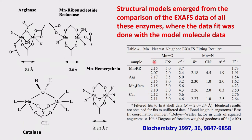Typically you find the distance and the coordination number — how many such atoms are there — along with the standard deviation. For manganese-oxygen and manganese-nitrogen you can get the number of nearest neighbors. From oxygen and nitrogen counts you can build up how many histidines are present; extra oxygens will be identified from their distances. This data is shown for ribonucleotide reductase, arginase, hemerythrin, and catalase, and from it you can derive the structures.